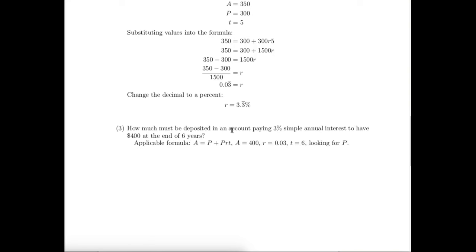Because the problem is a simple interest problem, we use the simple interest formula. We're told what the future value needs to be. That's $400. We know that the interest rate is 3% or 0.03 as a decimal. And we are looking at six years from now. We need to know what the present value is.